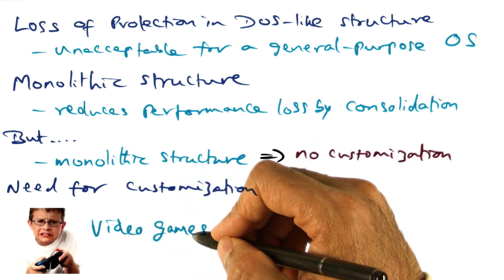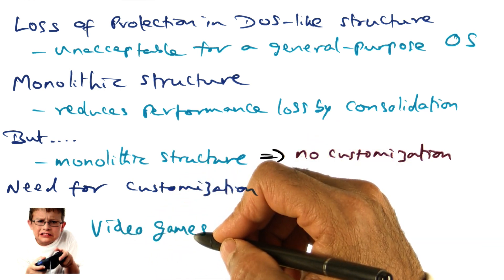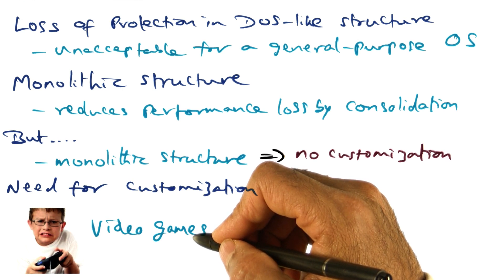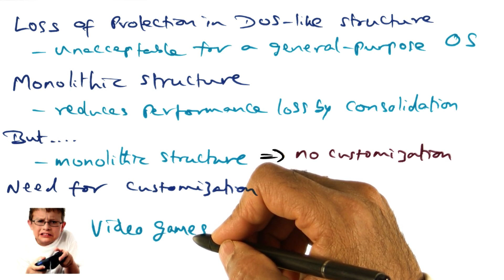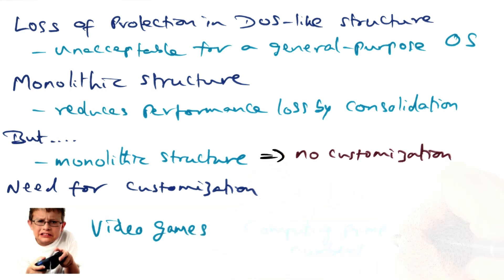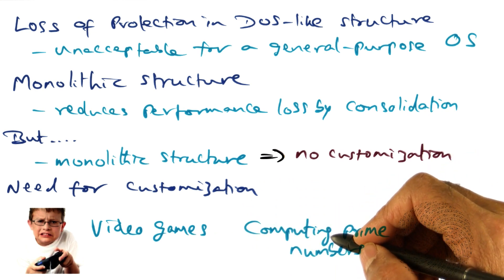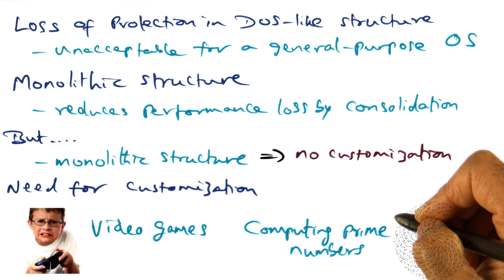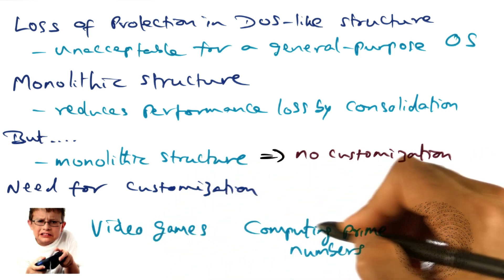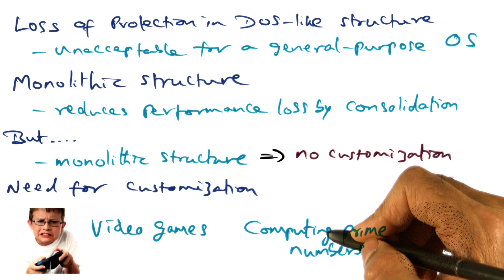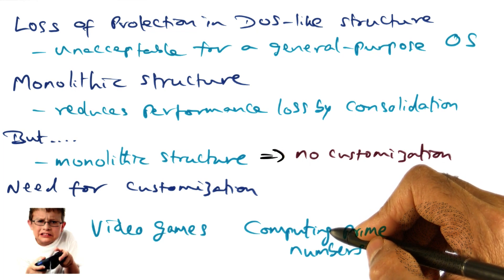For example, interactive video games - the requirement of applications that are providing a video game experience for the user. Or consider another application which is computing all the prime numbers. You can immediately see that the operating system needs for these two classes of applications are perhaps very different.